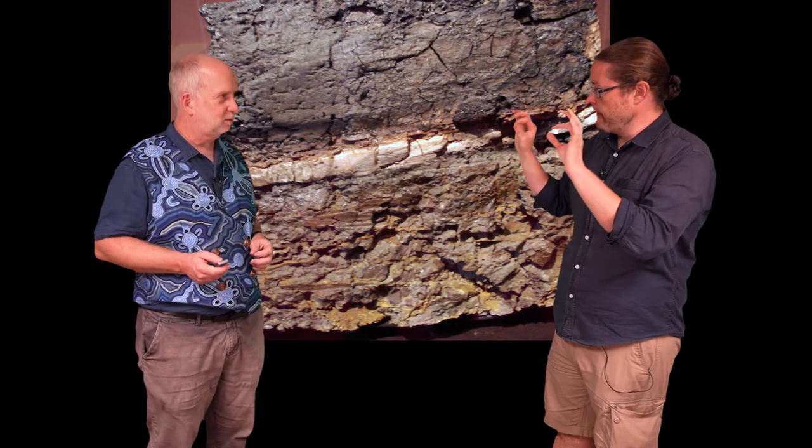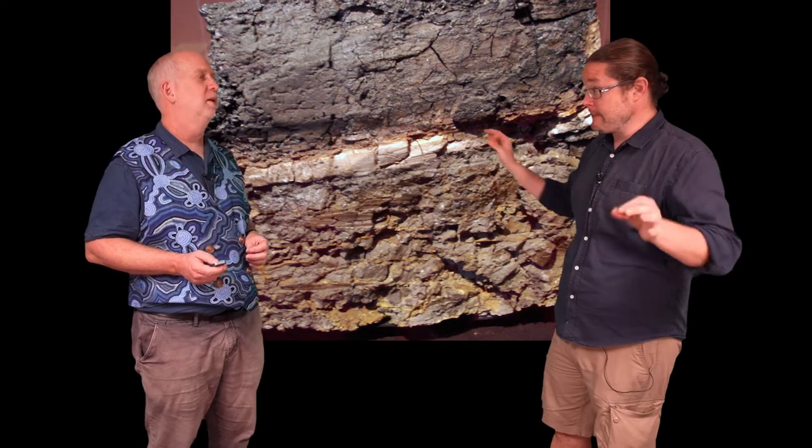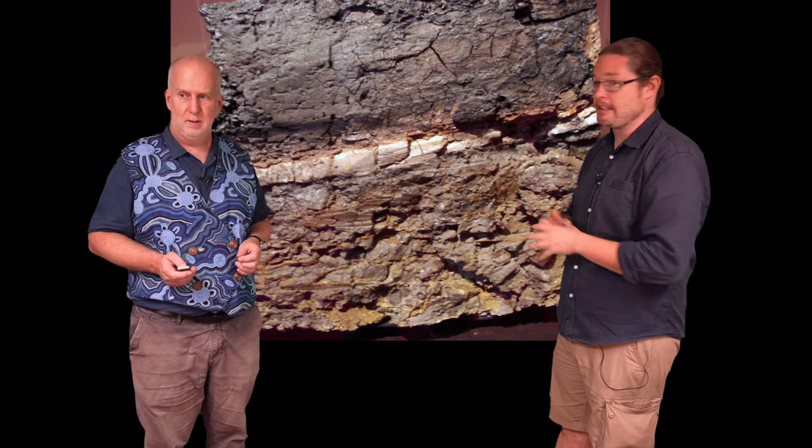So we see this very thin layer of elements that are more common in an asteroid than on Earth. And we see this equally everywhere around the Earth, right? We see this at all, we dig down, we get the same layer and we see the same thing.